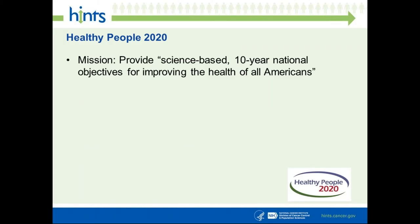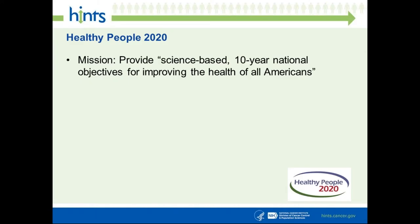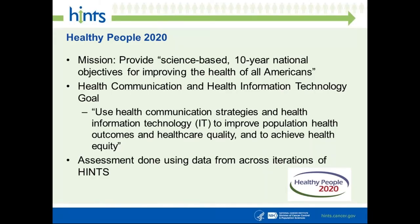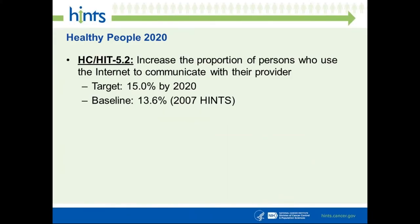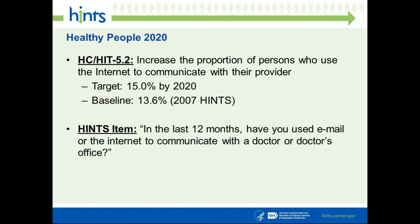The context here is that HINTS is a great resource to monitor public health trends. The mission of Healthy People 2020 is to provide science-based, 10-year national objectives for improving the health of all Americans. My area of interest is health information technology and patient-reported outcomes. The HINTS team decided to use HINTS in conjunction with the Healthy People 2020 team to monitor specific trends. The goal I'm sharing today was to increase the number of individuals who contact their provider via email, with a target of 15 percent of the general population by 2020.